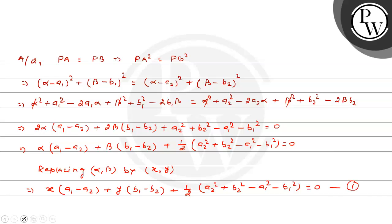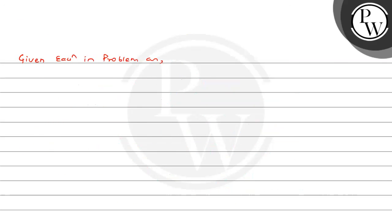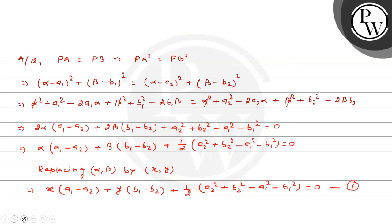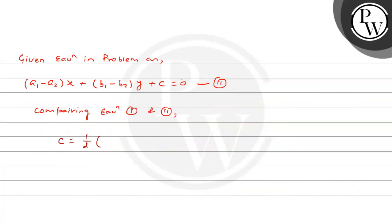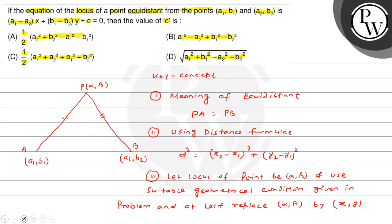Replacing alpha, beta by x, y — equation आती है: x·(a1 − a2) + y·(b1 − b2) + 1/2·(a2² + b2² − a1² − b1²) = 0. This is equation 1. Given equation in problem: (a1 − a2)x + (b1 − b2)y + c = 0. Comparing equation 1 and 2, c = 1/2·(a2² + b2² − a1² − b1²). So the most appropriate option is option A. Hope you understood it well. Best of luck.